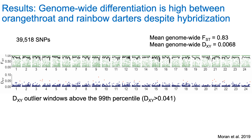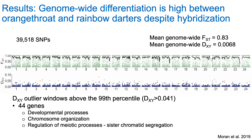Looking at genetic divergence between parental genomes, I first used FST — a relative measure of sequence divergence — and found it was quite high throughout the genome. Because FST can be inflated depending on levels of within-population diversity, I also examined an absolute measure of genetic divergence, DXY. With this approach, I found several distinct outlier windows above the 99th percentile. Within those windows there were 44 genes with over-represented ontologies associated with developmental processes, chromosome organization, and regulation of meiotic processes like sister chromatid segregation — strong candidates for postzygotic isolating barriers.